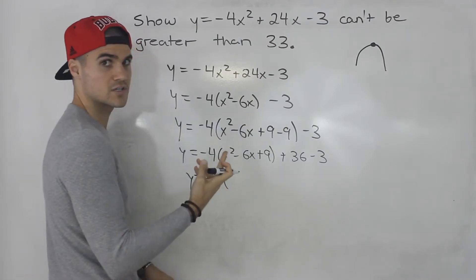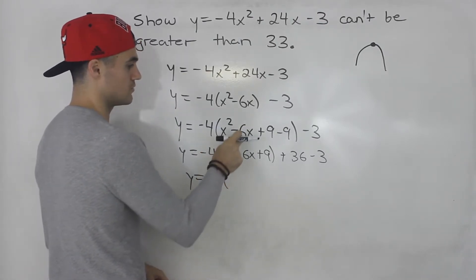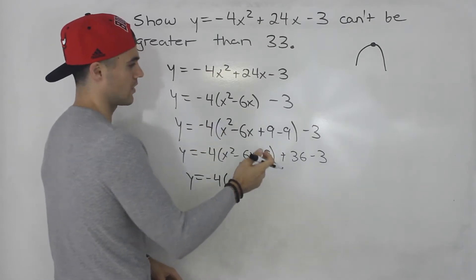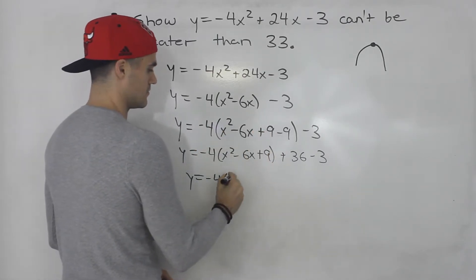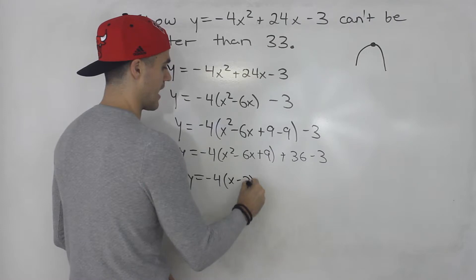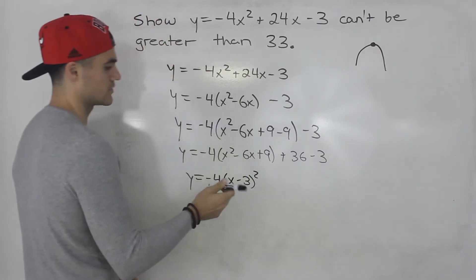This here will always be a perfect square trinomial. It's why we do the b over 2 squared part to get this, because that allows us to have a perfect square trinomial every time.